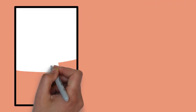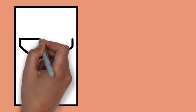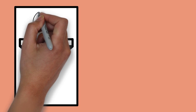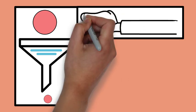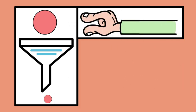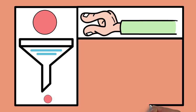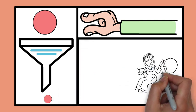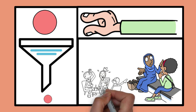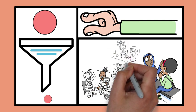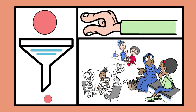Treisman's filter attenuation theory suggests that instead of completely blocking out unattended information, our brain attenuates it. This means we reduce the strength of irrelevant information but don't entirely ignore it. For example, imagine you're in a busy café focusing on a conversation with your friend — the chatter and clinking of dishes are background noises.